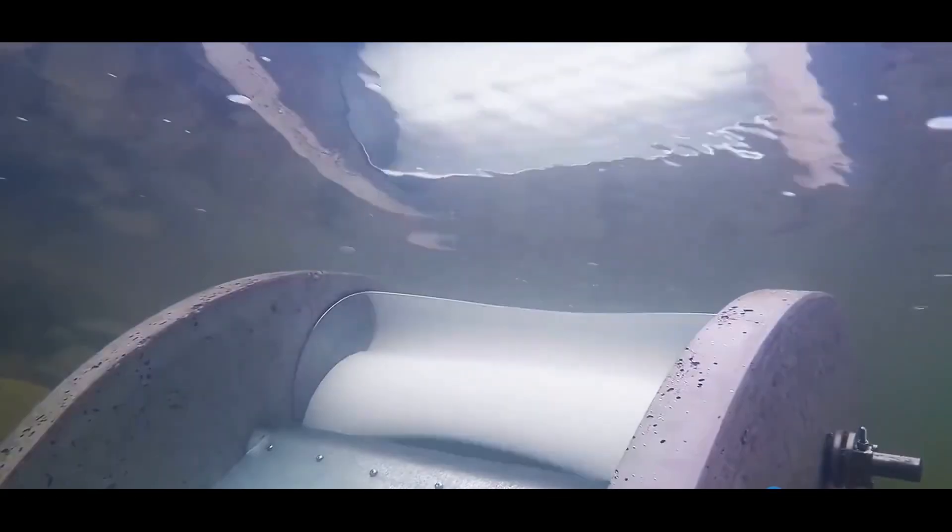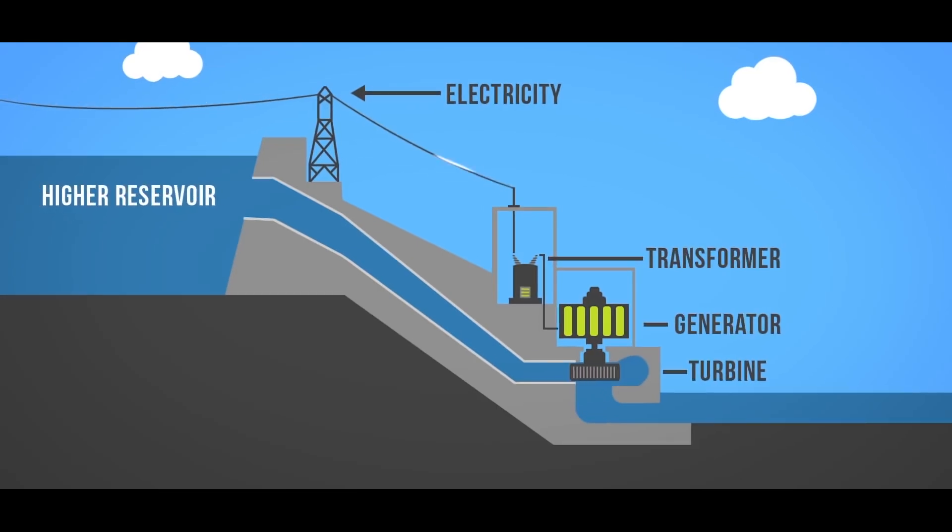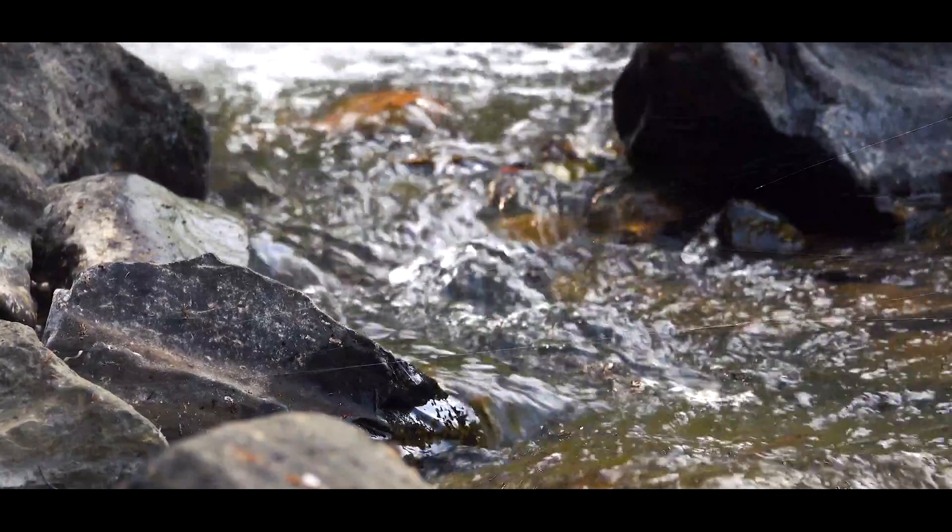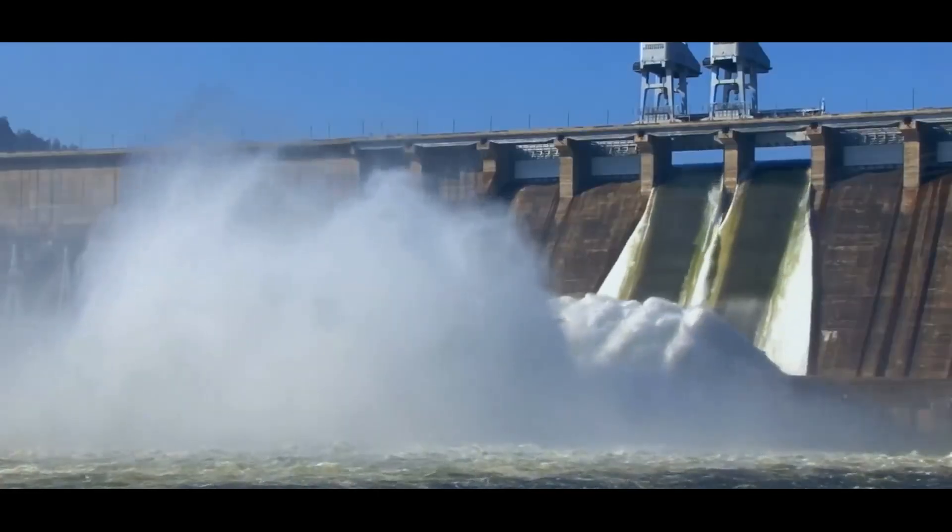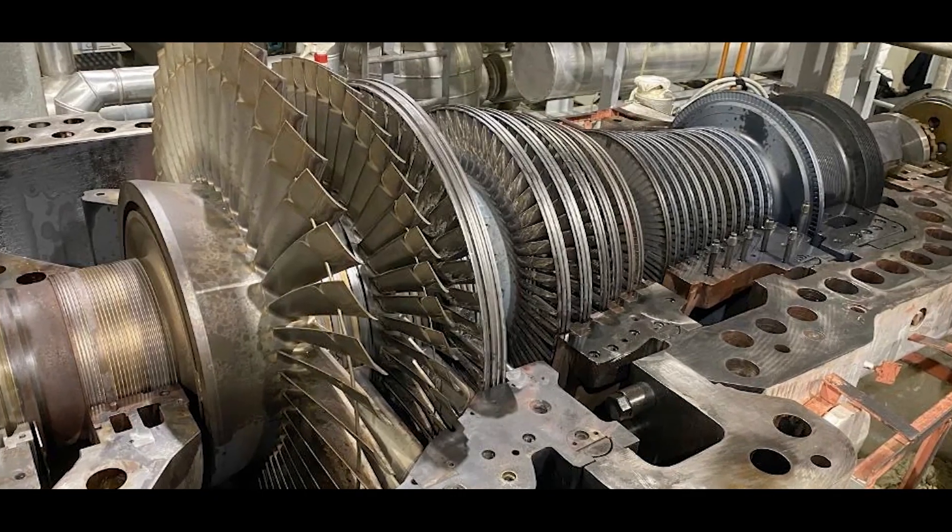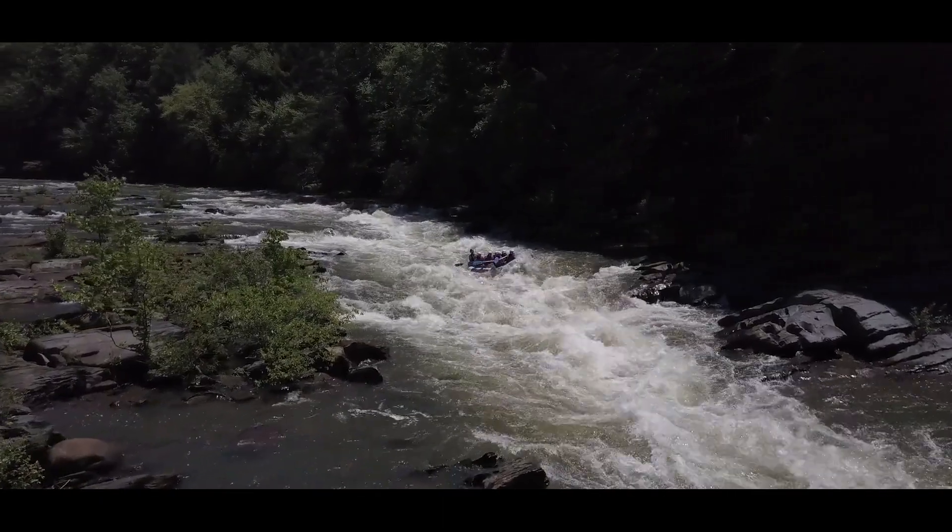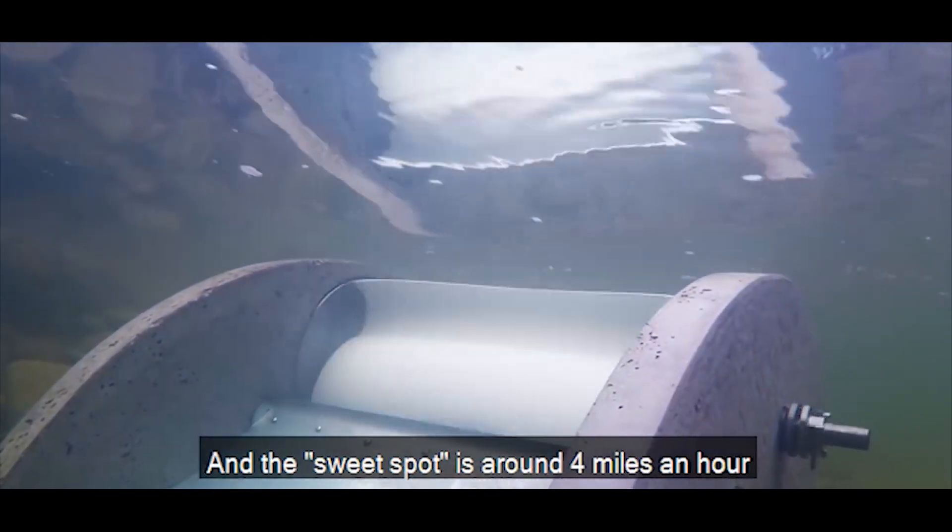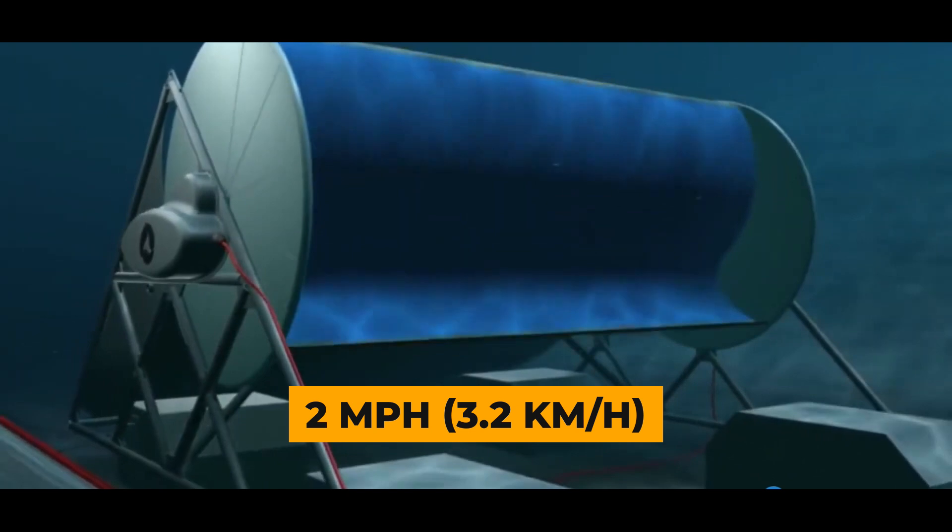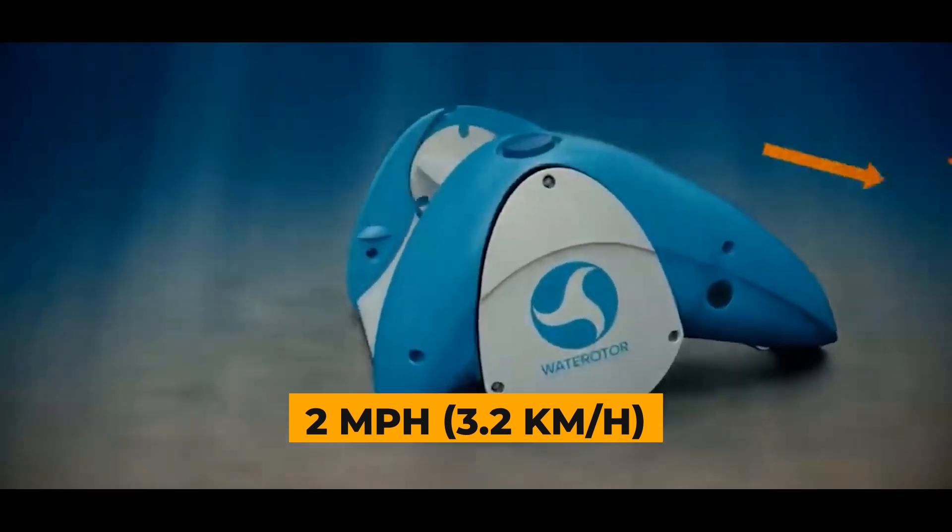Water Rotor. The Water Rotor is another fascinating innovation in the realm of hydroelectric technology. It's a unique turbine designed to harness energy from slow-moving water, opening up possibilities for capturing power in places previously untapped. Unlike traditional turbines that need fast-flowing rivers or tidal currents, the Water Rotor can generate electricity in water moving as slow as 2 miles per hour.